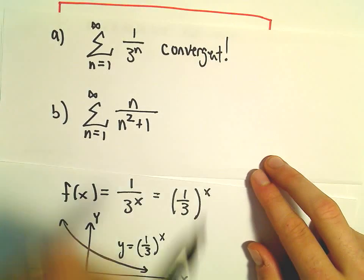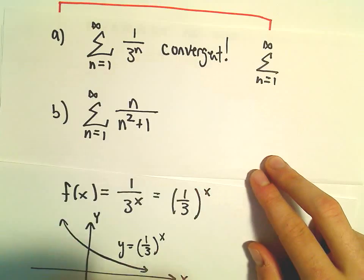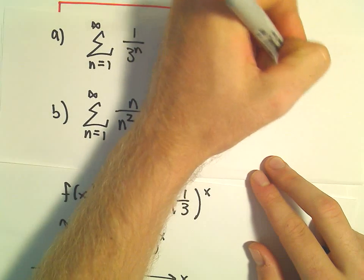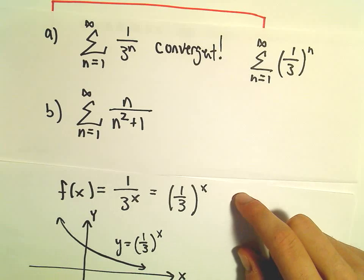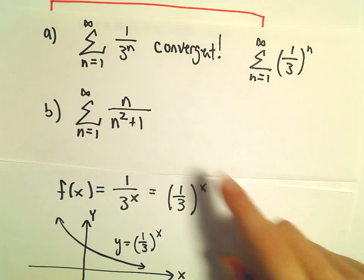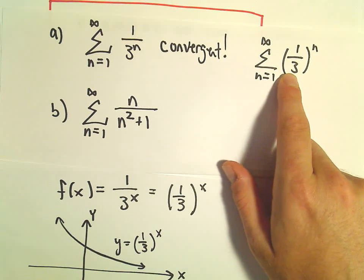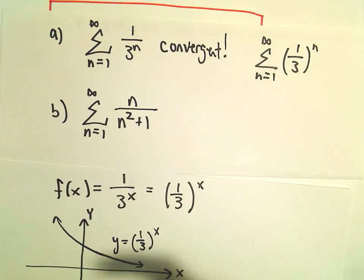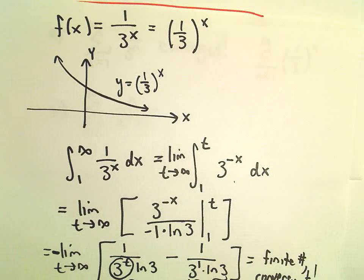Probably the easiest way to justify this one, just to point it out real quick in case maybe you didn't think about it. This is just a geometric series as well, 1 over 3 raised to the n. So certainly you can recognize it as being a geometric series, which is what I would do and say it converges because the r value is between negative 1 and 1, and then I would be off to the next problem. But just to illustrate the use of the integral test here.